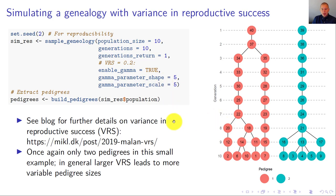We again get two pedigrees in this small example. In general, larger VRS values produce more variation in pedigree size.